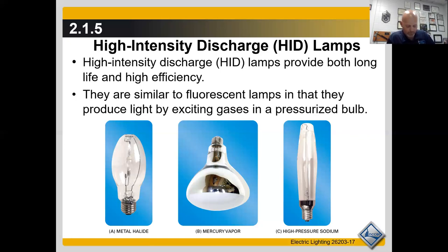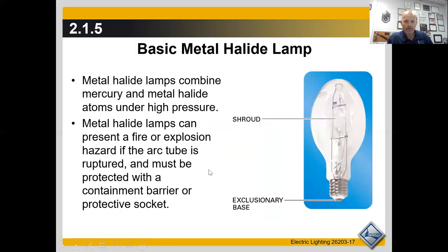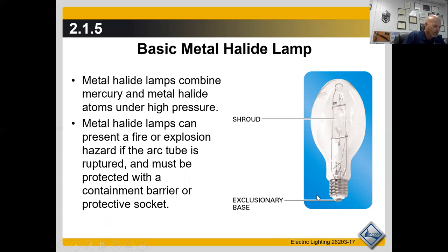Like fluorescent lamps, HID lamps must be used in matching fixtures specifically designed for that lamp and wattage. There are three types of HID lamps: mercury vapor, metal halide, and high-pressure sodium. Metal halide lamps are very energy efficient with 80 to 150 LPW, excellent color rendition, long service life of more than 20,000 average hours, and good lumen maintenance. The excellent color rendition of metal halide is a test question point.